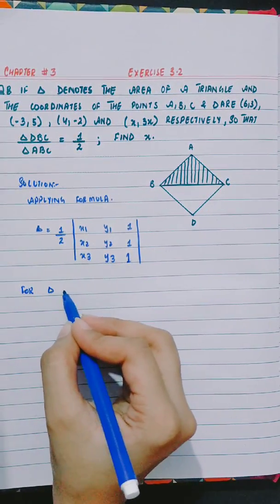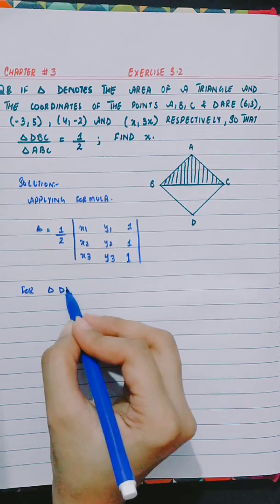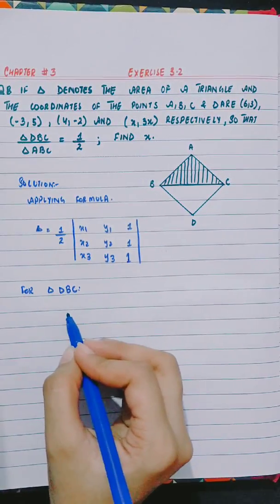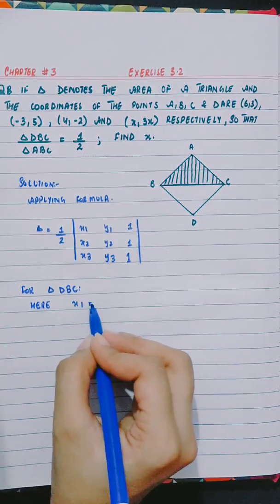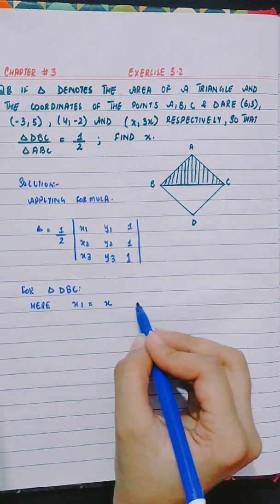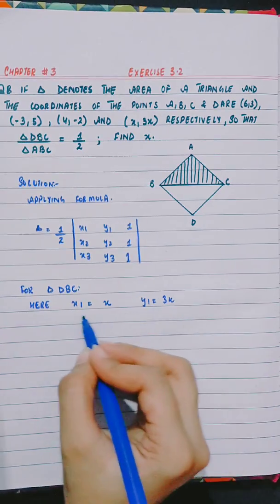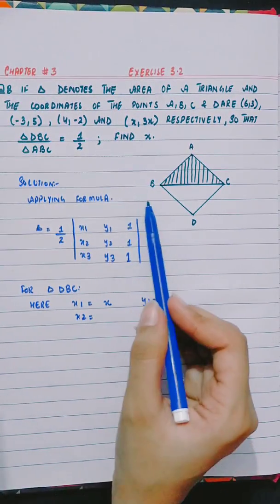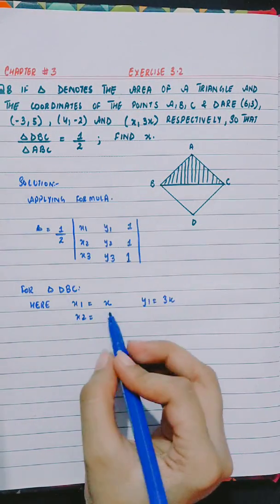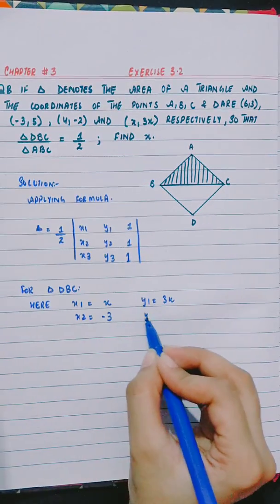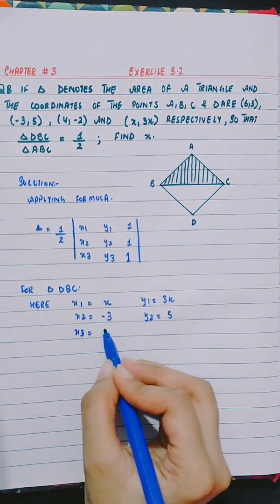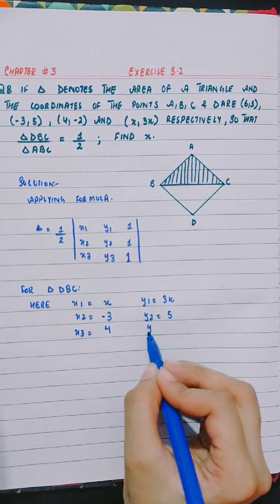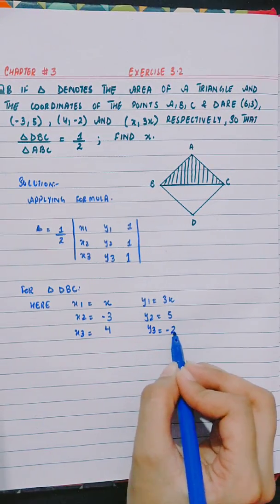For triangle DBC, here x1 is x, y1 is 3x, x2 is -3, y2 is 5, and x3 is 4, y3 is -2.